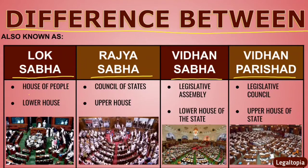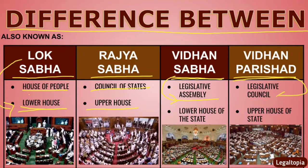Lok Sabha's other name is House of People, whereas Rajya Sabha's other name is Council of States. Lok Sabha's other name is also Lower House, and Rajya Sabha's other name is Upper House. Vidhan Sabha's other name is Legislative Assembly. Vidhan Parishat's other name is Legislative Council, which is the State's upper house, similar to how Rajya Sabha is the national upper house, whereas Vidhan Sabha is the State's lower house.